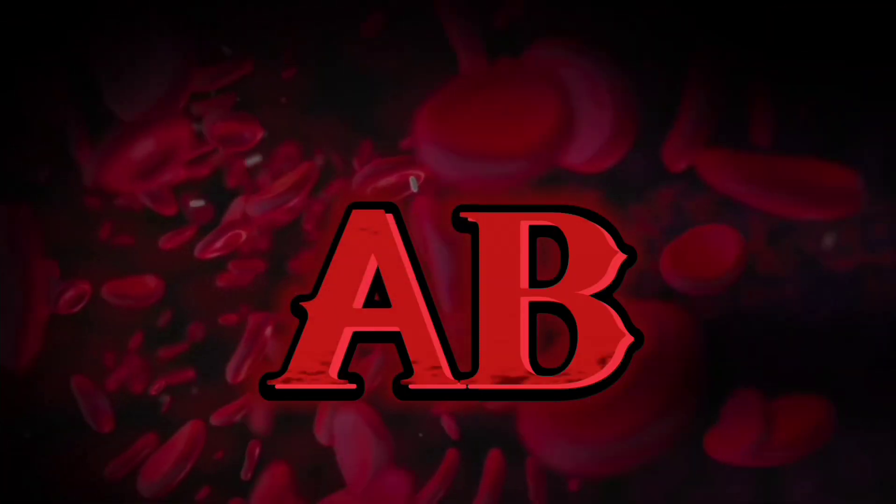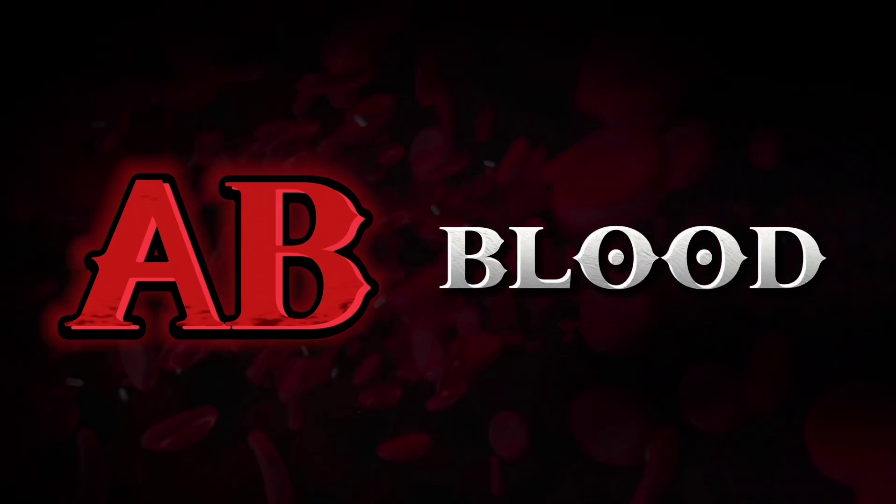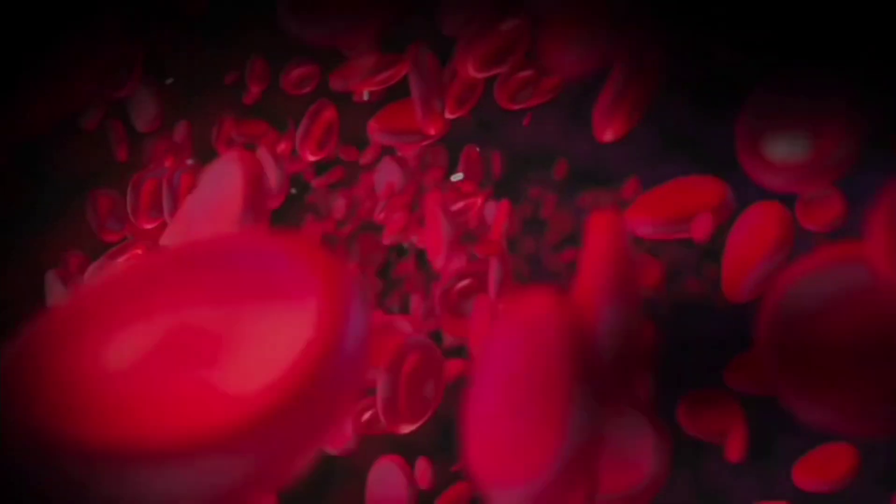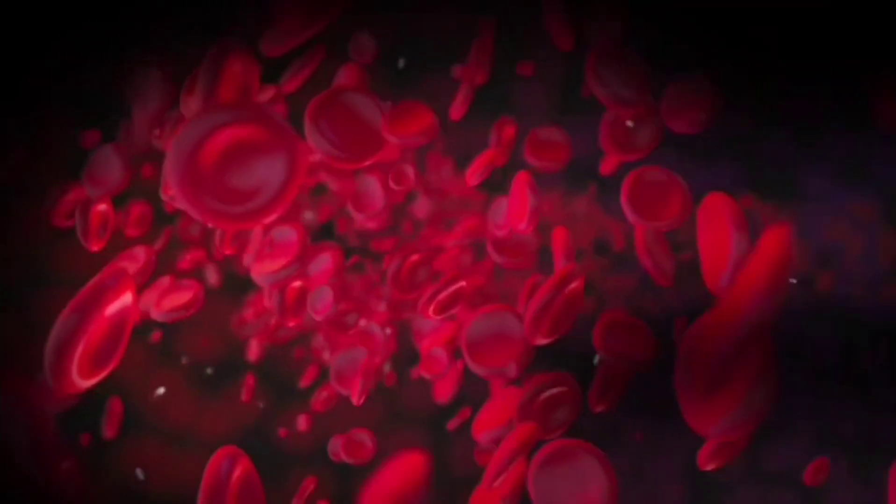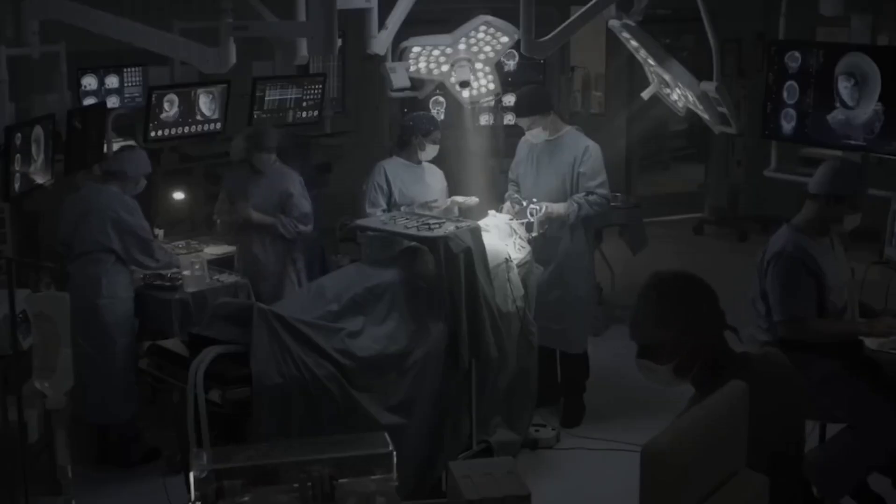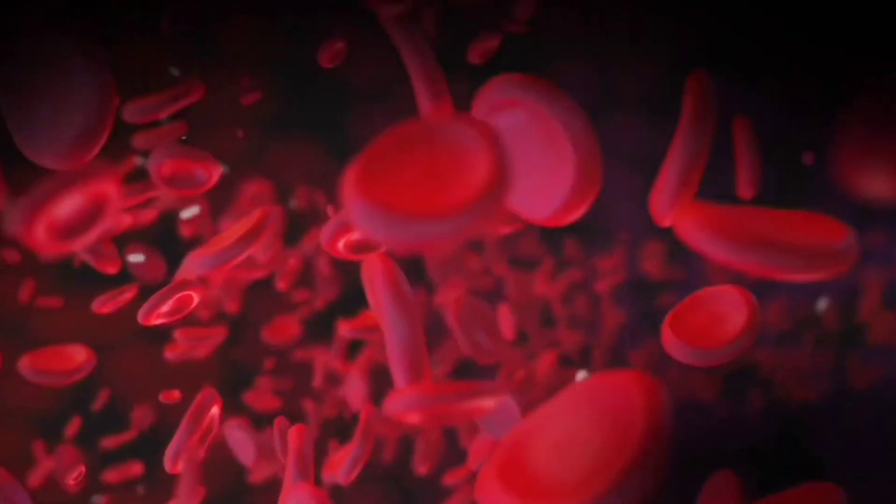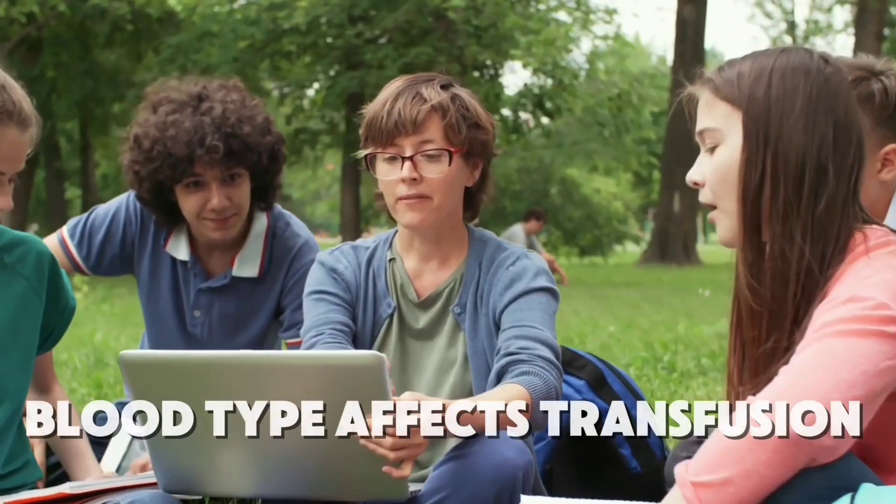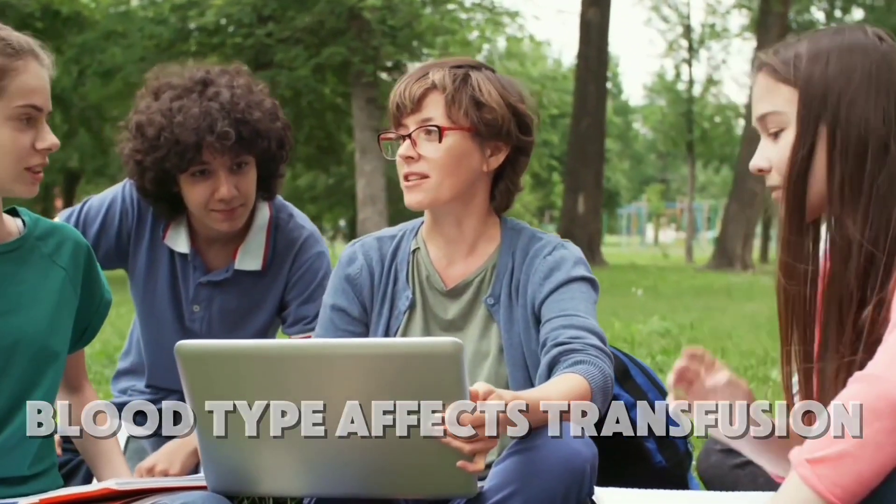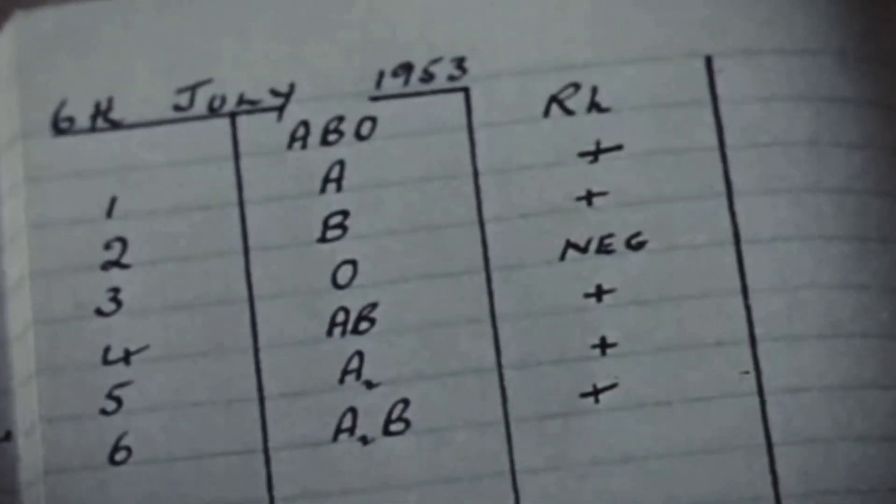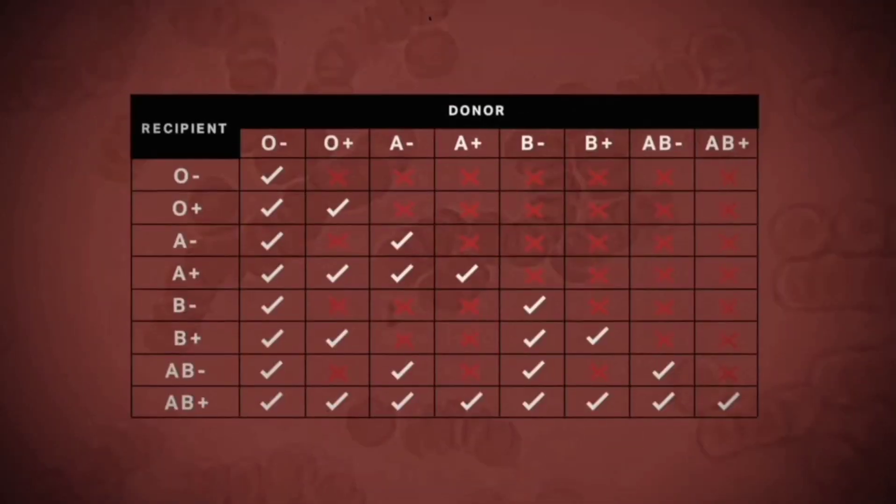Fact 30. AB blood connects people through generosity. When you give blood or plasma as an AB donor, you're helping people you'll never meet. A newborn in the NICU. A car crash victim in surgery. A cancer patient receiving treatment. These lives depend on rare blood types like AB. It's one of the most direct and powerful ways a person can help another. No fame. No reward. Just quiet, life-saving action.